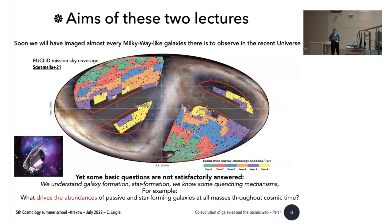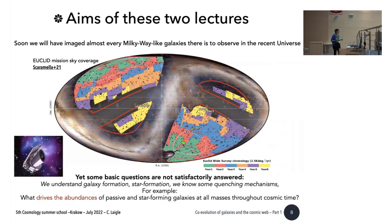Despite this huge amount of data — from Euclid and from already-existing galaxy surveys — there are some basic questions we do not yet understand about galaxy formation. We broadly understand galaxy formation and star formation, and we know some quenching mechanisms that can extinguish star formation within galaxies. But we don't know quantitatively what really drives the abundance of passive and star-forming galaxies across cosmic time.